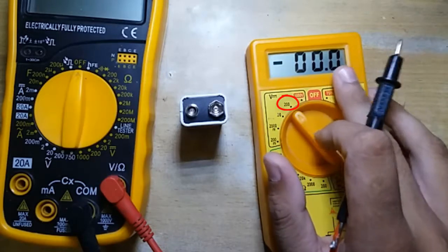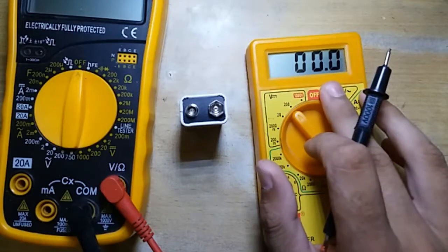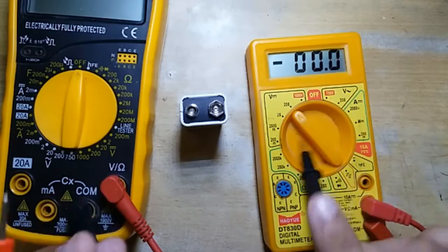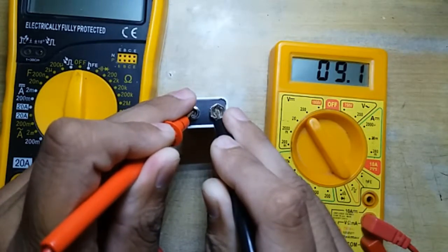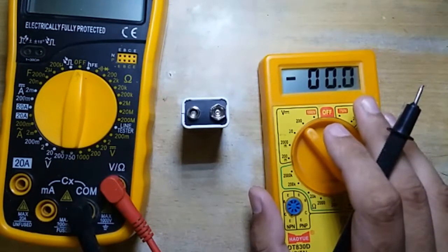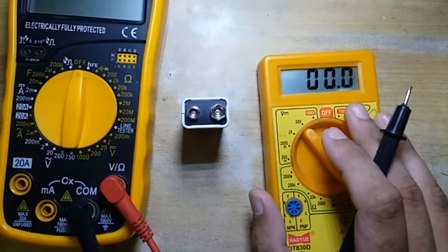But after moving the dial to 200 volt setting, we see a single decimal digit after the point appears in our display. So if I take the voltage leads now, it measures 9.1 volts, which is more accurate than 9 volts what we measured with 1000 volt setting previously.